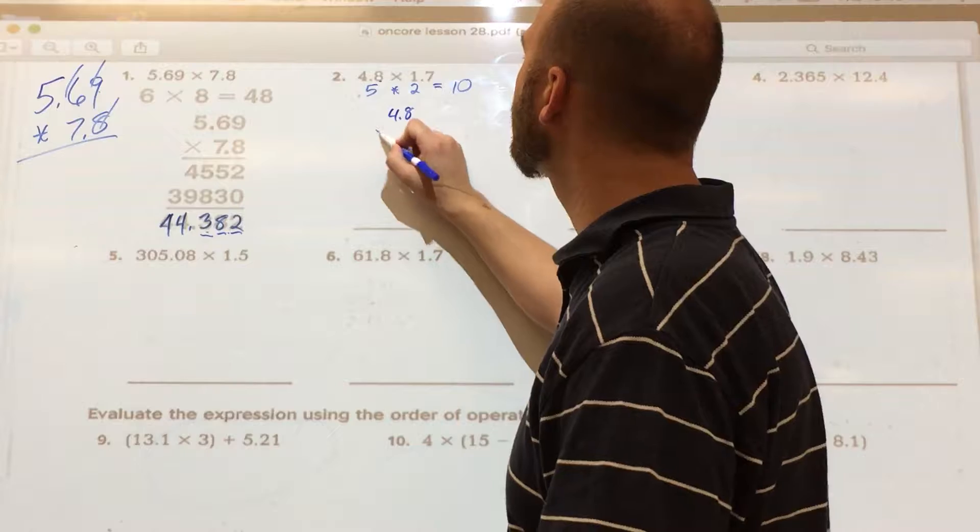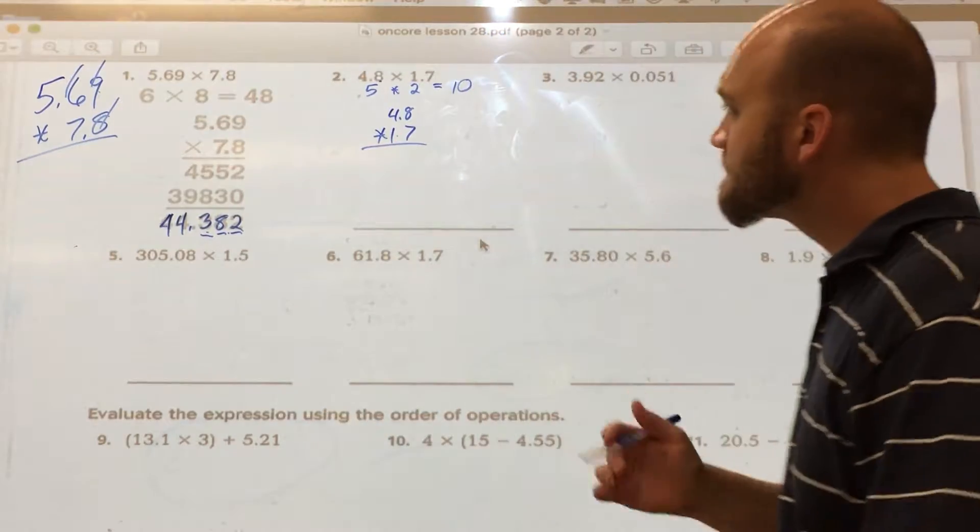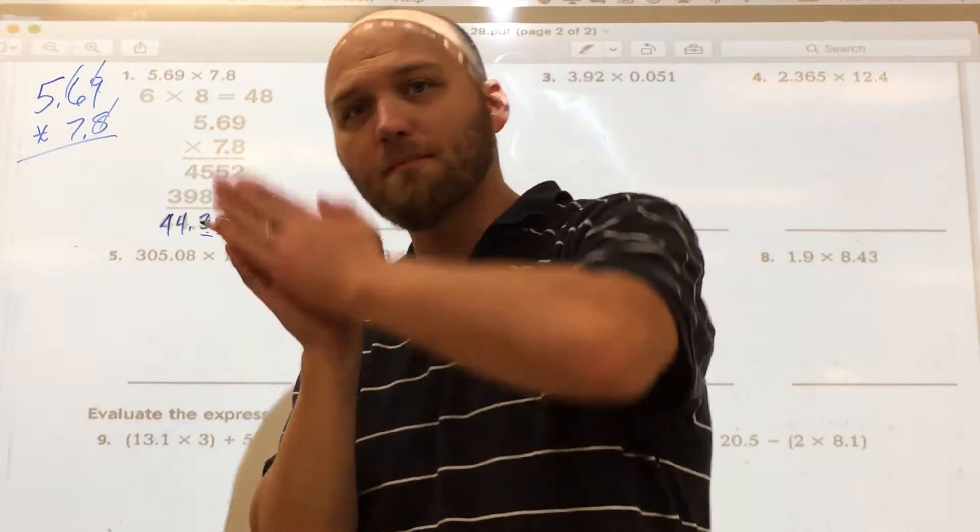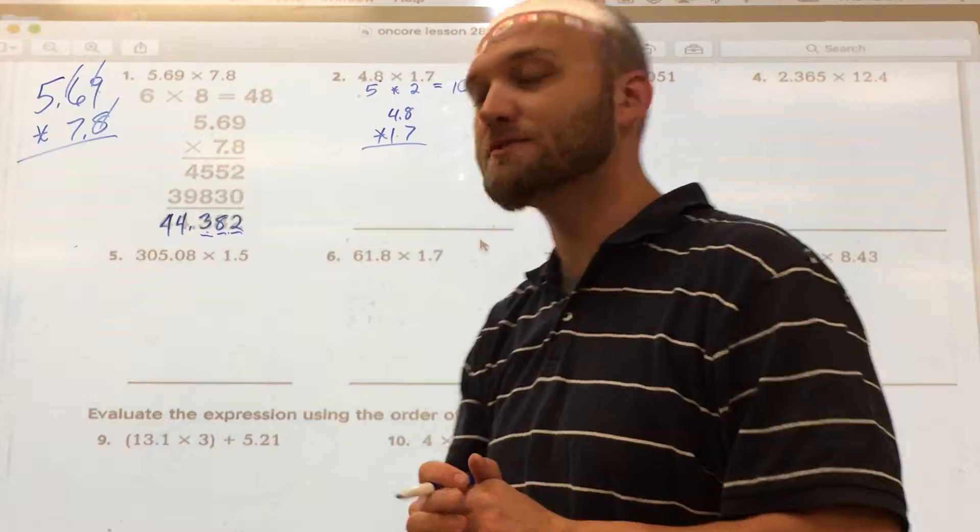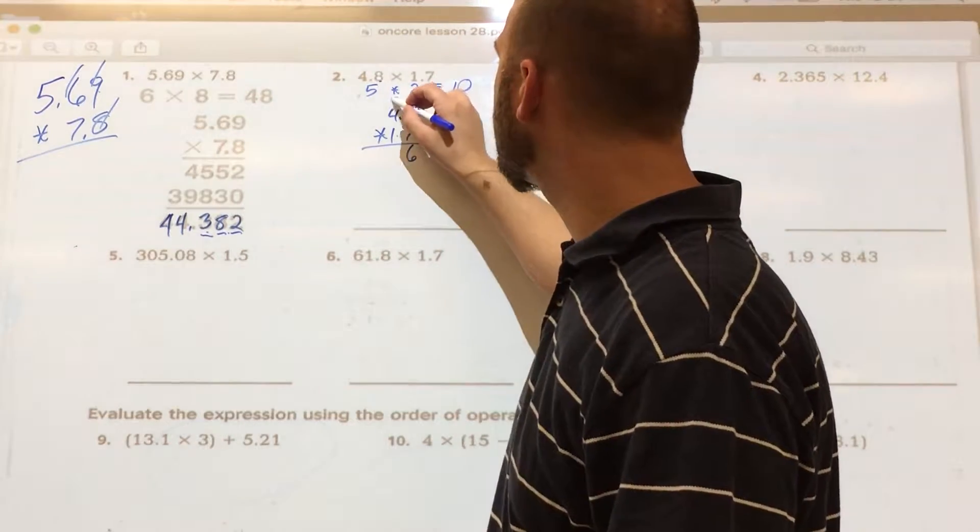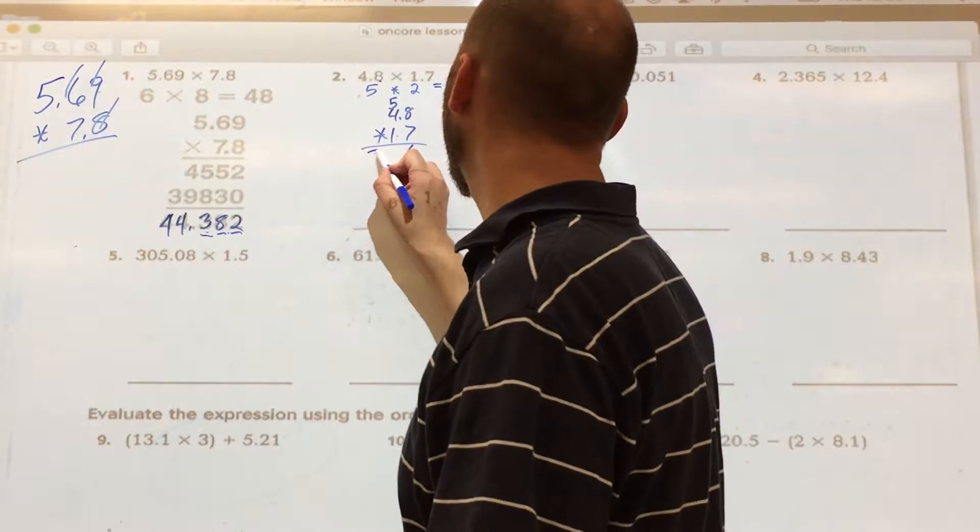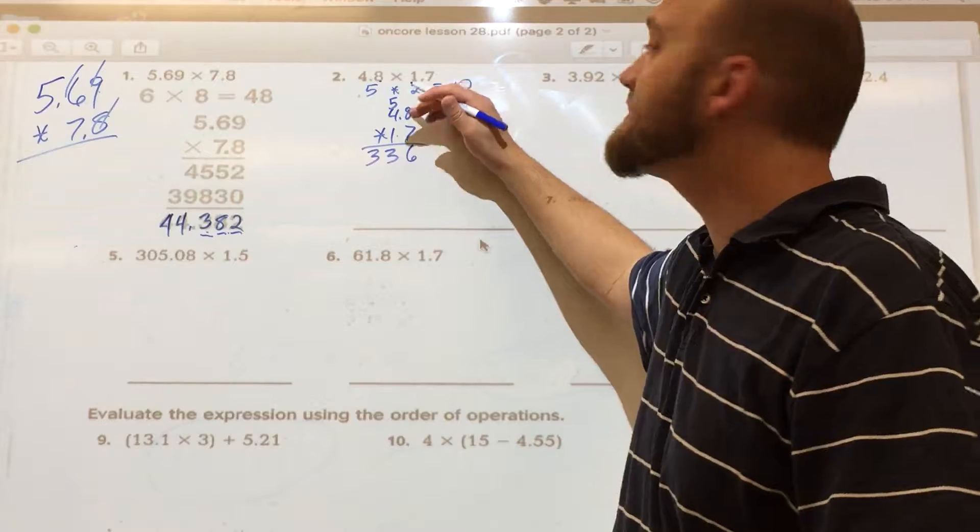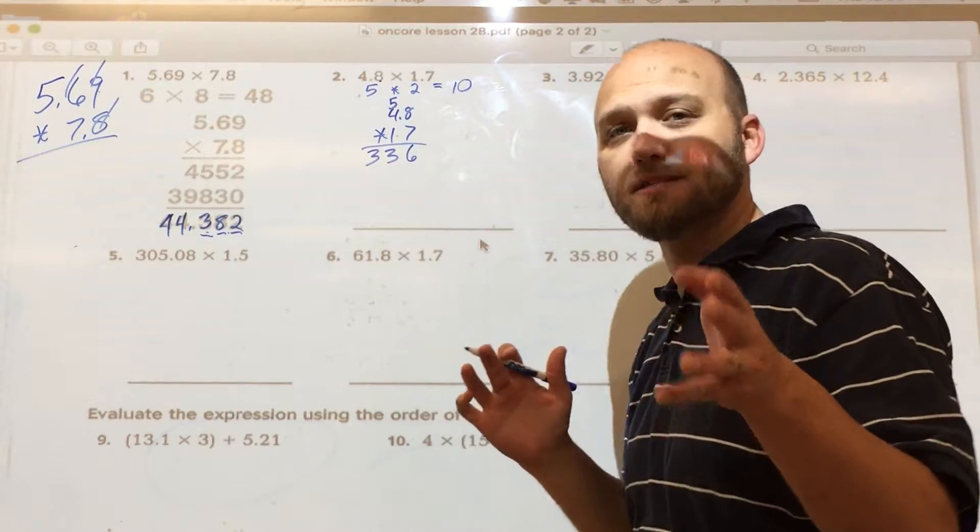So I'm going to rewrite it. 4.8 times 1.7. So from here, I'm going to multiply first with my ones place, and multiply across everything on top, and then I'm going to multiply in the tens place, and multiply everything else across. So I have 7 times 8, which is 56. 7 times 4, which is 28, plus 5, which gives me 33. Now, 7 times 4.8 is not 336, but I'm not worried about where my decimal goes now. I'm going to keep that decimal place until the end.